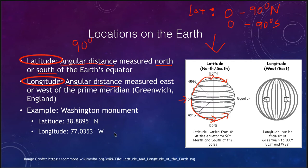Longitude is also an angular distance — both of these are angle measures — and longitude is measured east or west of what we call the prime meridian. A meridian itself is just a line forming a great circle on the earth that passes through the two poles and is therefore centered on the center of the earth. Any line that does that would be called a meridian, and we select one to be the prime meridian.